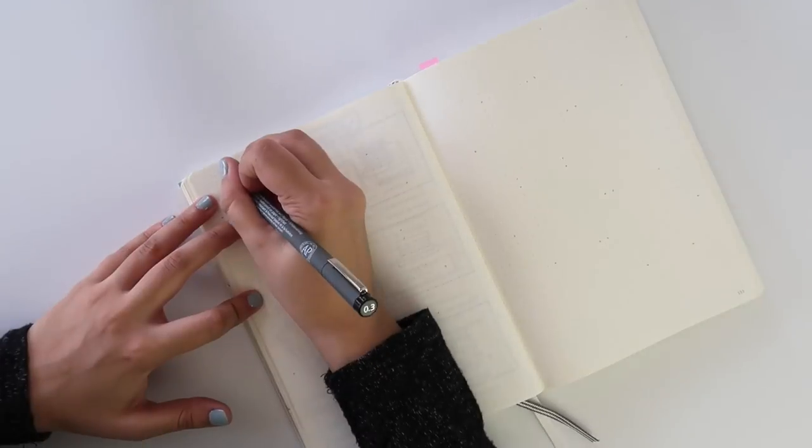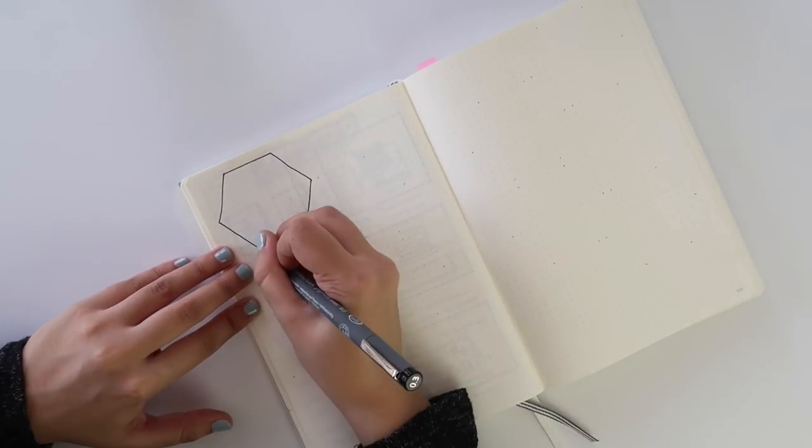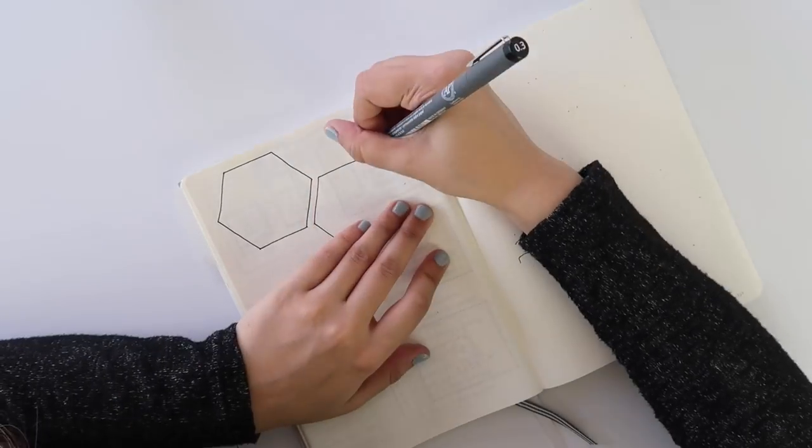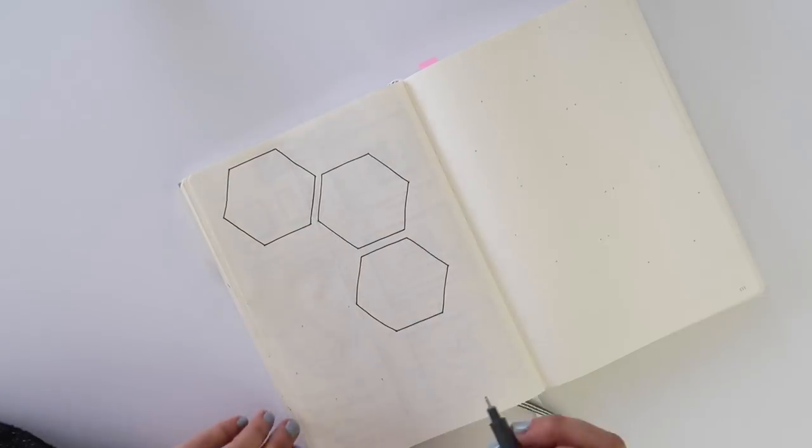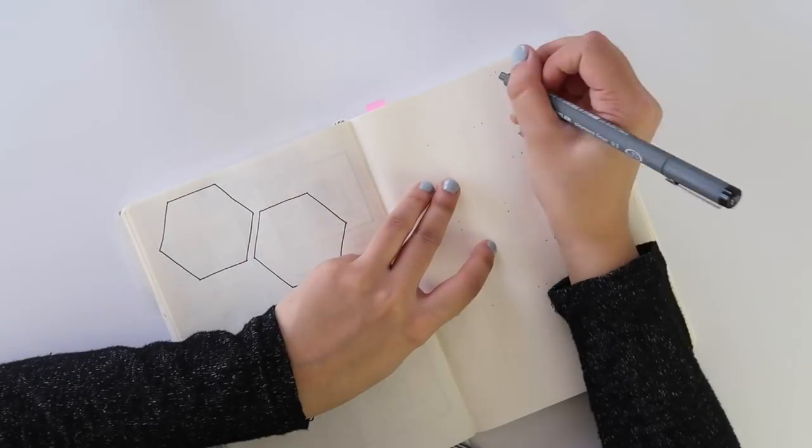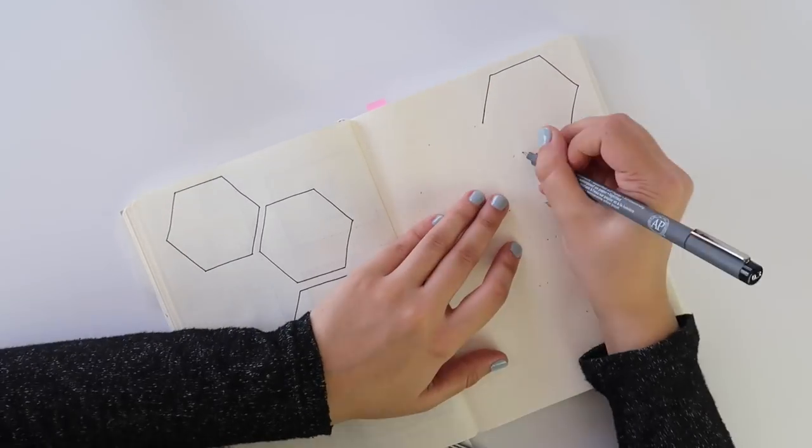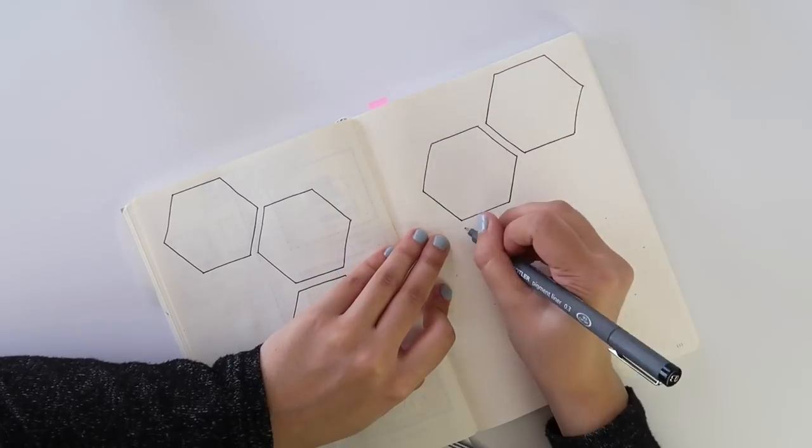The last two pages were dedicated to my weekly spread and I brought back the bee theme that I started on the first page by creating this honeycomb spread. Each day of the week gets their own hexagon and there's an extra hexagon for a to-do list.